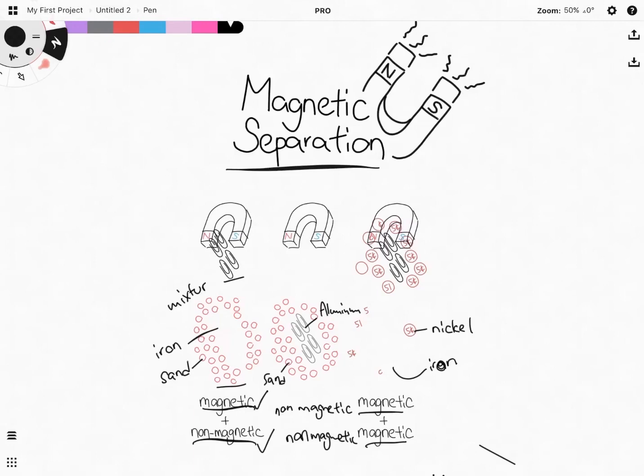Don't always just use it when you see magnetic substances. You must be sure that only one of the substances that you want to separate has the property. And that's all for magnetic separation.